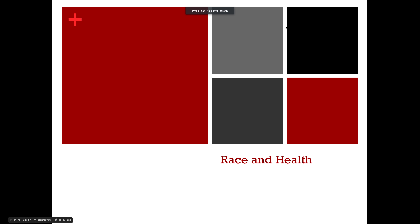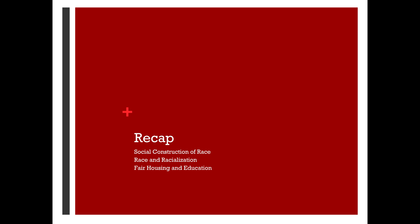Hi, and welcome to the last lecture of the course. I'd like to wrap up by talking a little bit more about race and health. In the last lecture video we talked about race as a social construction — how racialization and essentialization work together to create a racialized society in the United States and elsewhere. We also talked about how institutionalized racism or structural inequalities had an impact on fair housing and education that led to segregation and thus unequal resources.